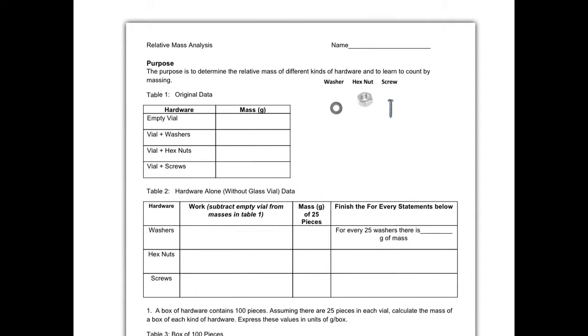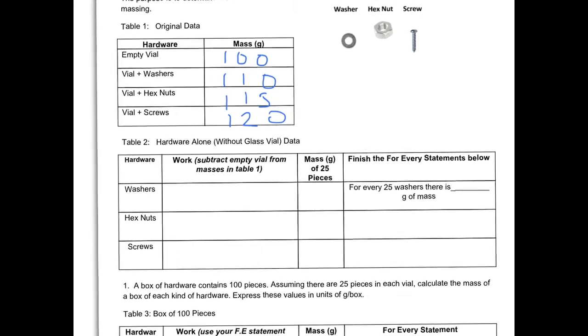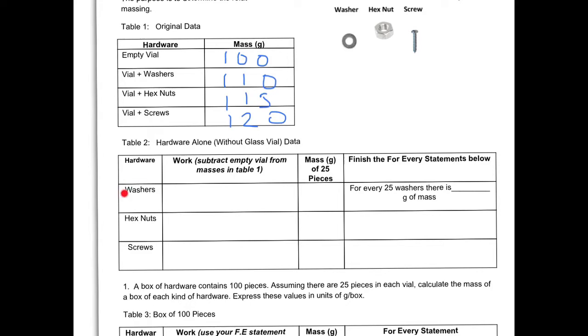I'm going to make up some data for our practice. The empty vial was 100 grams, the washers were 110, the hex nuts were 115, and let's make these 120. The first table has you look at just the hardware by itself. If I measure the vial and the washers, and just the vial by itself, then to find just the washers, I subtract the mass of the vial and washers from the empty vial itself.